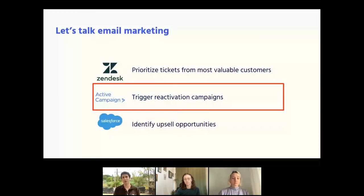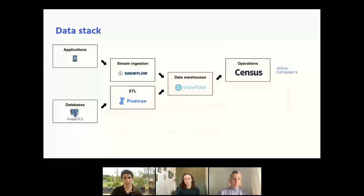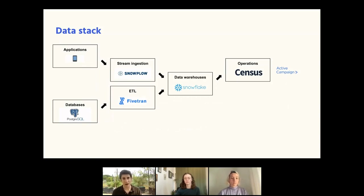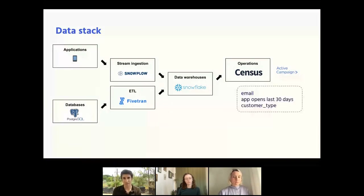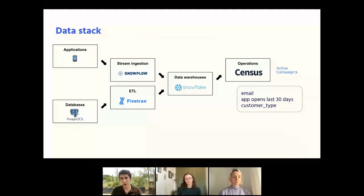Let's talk about email marketing in particular — triggering reactivation campaigns based on behavioral data. The stack to support this might look like: Snowplow tracking app opens and screen views, streaming that data into a Snowflake warehouse; ETL-ing data out of the Postgres database that backs the application into Snowflake; then a simple SQL query joins that data together for use in a tool like Census that sends it to ActiveCampaign. Specifically, we join the user's email, how many times they've opened the app in the last 30 days, and the customer type from Postgres, so reactivation campaigns can be triggered automatically and differentiated by customer type.